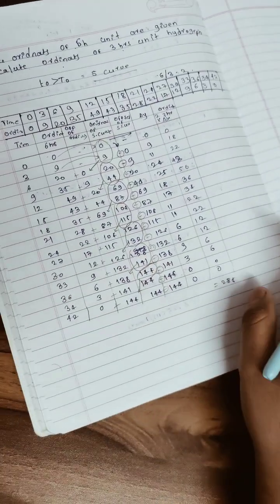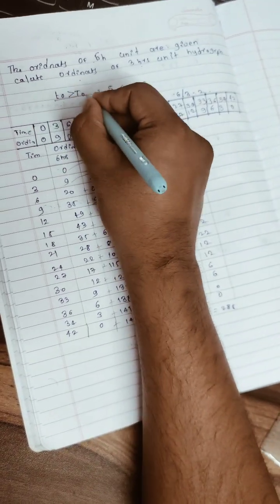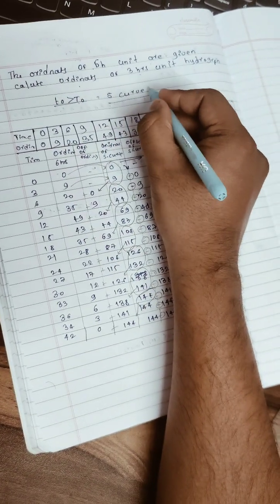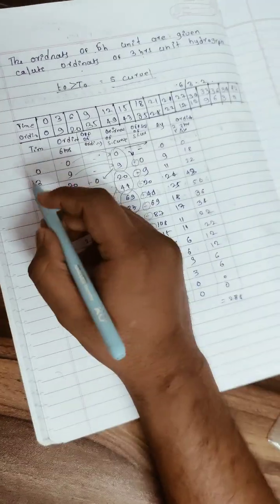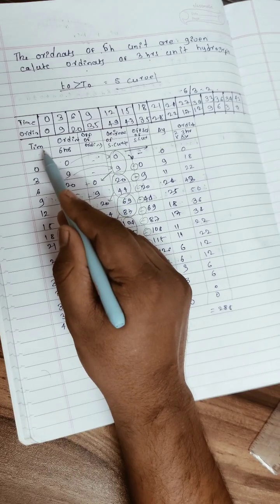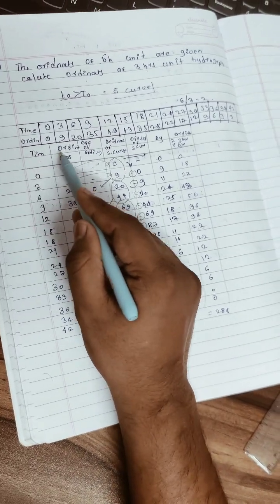First we know that small t₀ is greater than big T₀, then we need to find from S-curve hydrograph. First we can write all these ordinates and the time in a row, then we need to make a table.